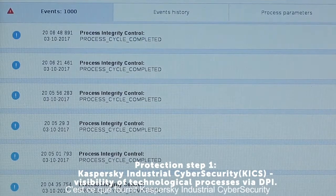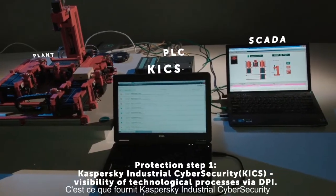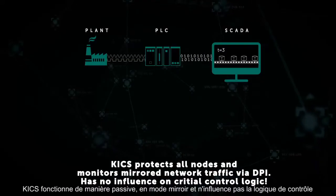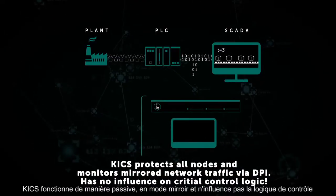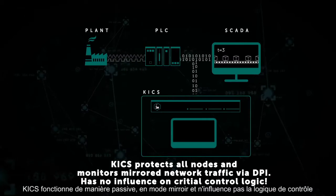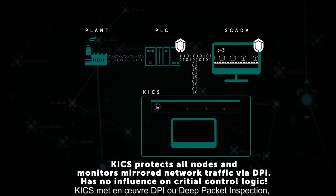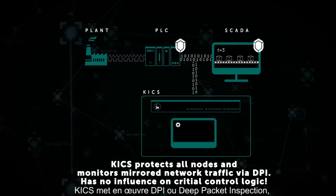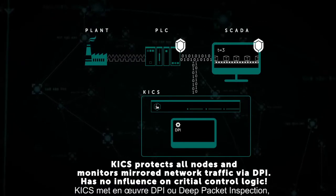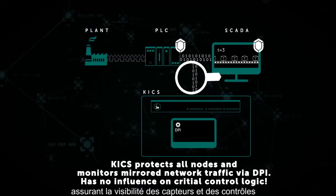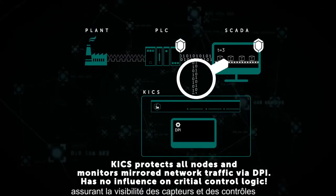That's what Kaspersky Industrial Security provides. KICS works with mirrored traffic and doesn't influence critical control logic. KICS implements DPI, or Deep Packet Inspection, providing visibility of sensors and controls.